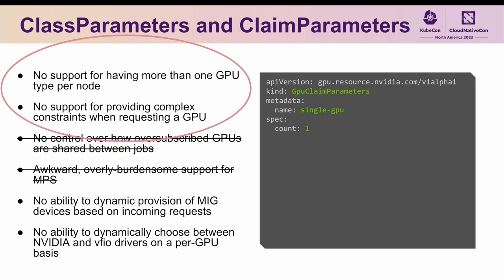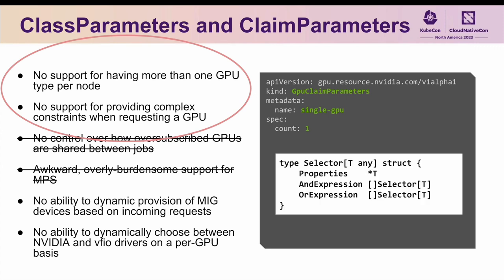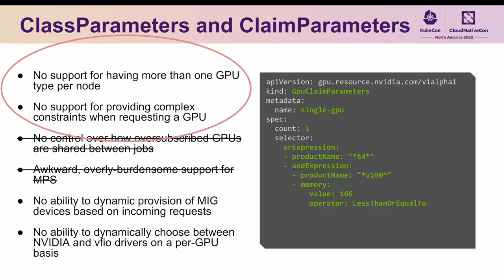The next limitations we'll look at concern heterogeneous GPU types and complex constraints. The same set of fields in the GPU claim parameter spec will allow us to overcome both. The basic idea is to define a selector field, which can either contain a single property — such as the GPU model you would like allocated to the claim — or a list of properties ANDed or ORed together recursively, up to a nesting level of 3. As a concrete example, consider a selector which, reading from top to bottom, says: give me either a T4 or a V100, and if you give me a V100, make sure it has less than or equal to 16 gigabytes of memory. Such a query would be useful, for example, to find an appropriate GPU to run an inference server on.